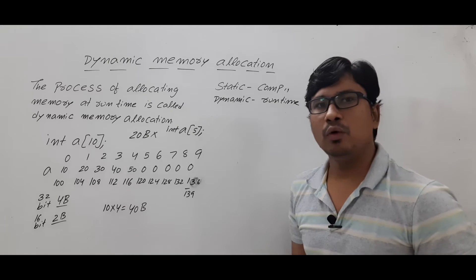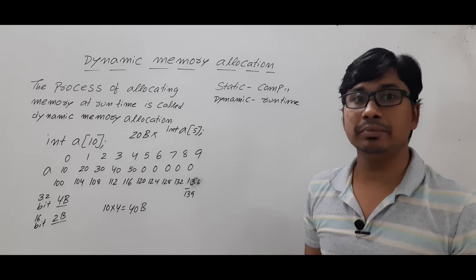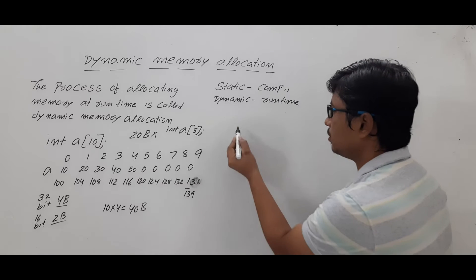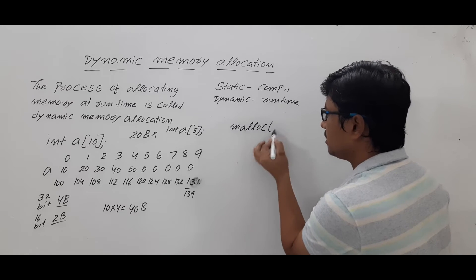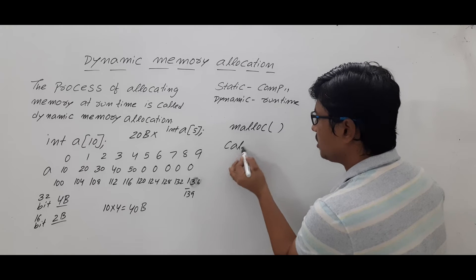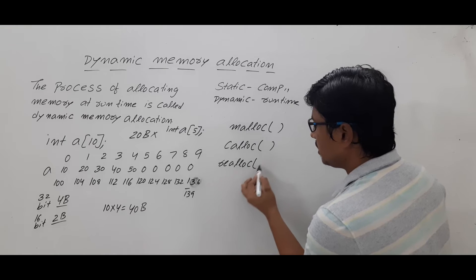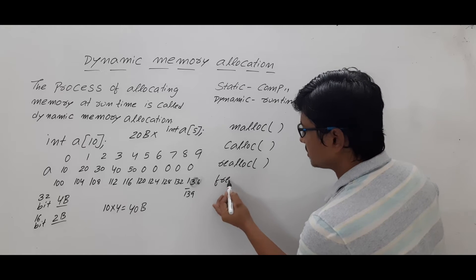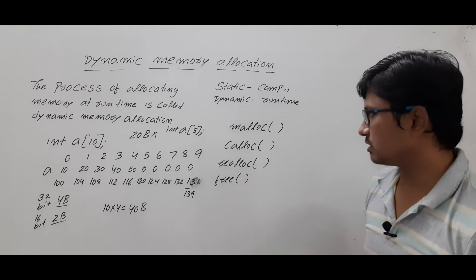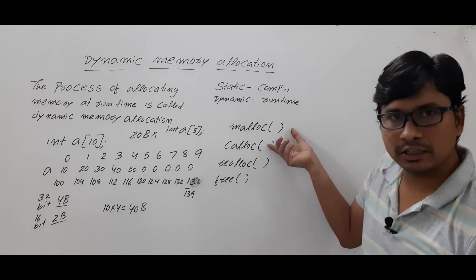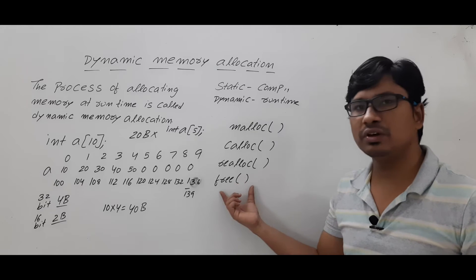Now, what are the functions used to allocate and release memory? We have four functions: malloc, calloc, realloc, and free. These are the four functions used in dynamic memory allocation. Malloc and calloc are for allocating memory, realloc is for reallocating memory, and free is for freeing the memory.